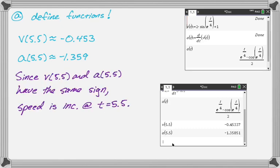But now we want to state our answer. So since V of 5.5 and A of 5.5 have the same sign, the speed is increasing at t equals 5.5. Anytime they have the same sign, speed will be increasing. Anytime it's opposite signs, speed will be decreasing.